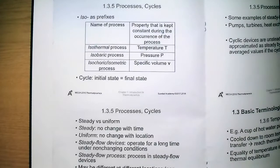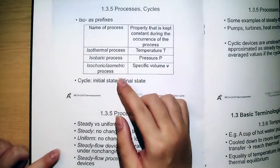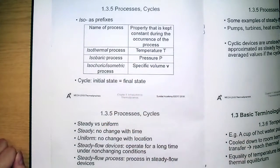Another category of process have iso prefixes, which means no change. The below table shows some of the properties having iso as prefixes.